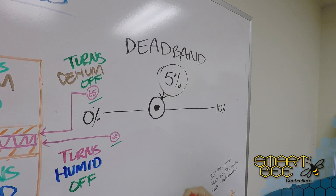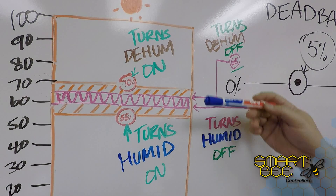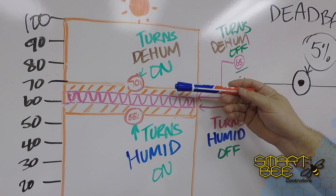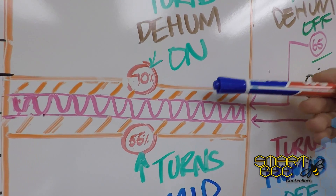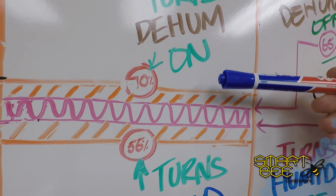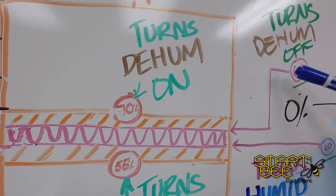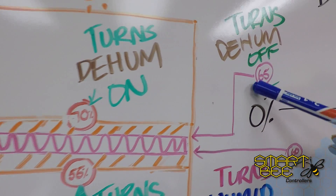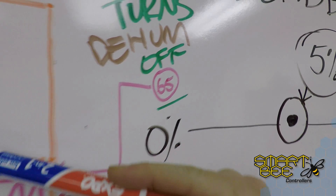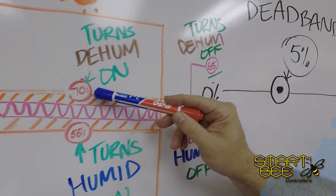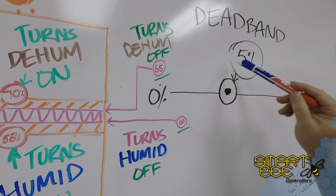What will realistically happen within your room is: in the event your humidity goes above 70 percent, the dehumidifier will kick on, but it won't kick off until it reaches 65 percent — your setting of 70 percent minus your 5 percent dead band.